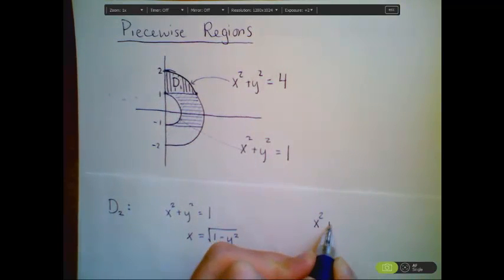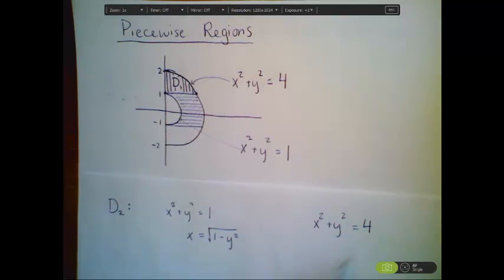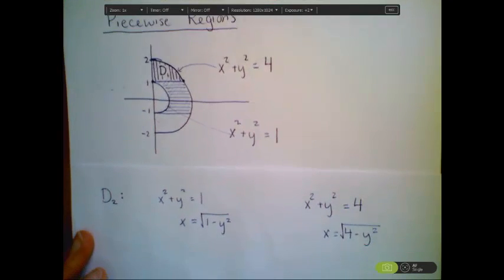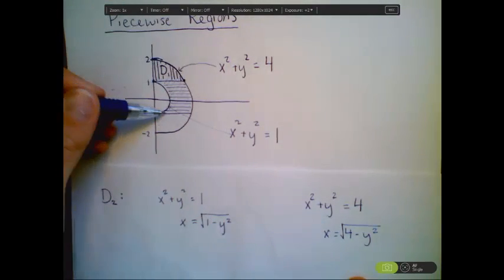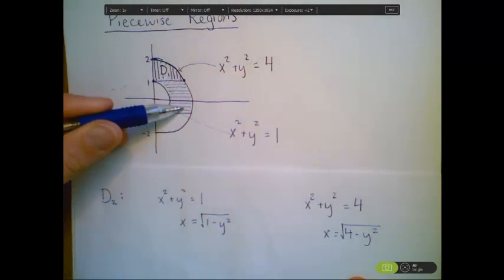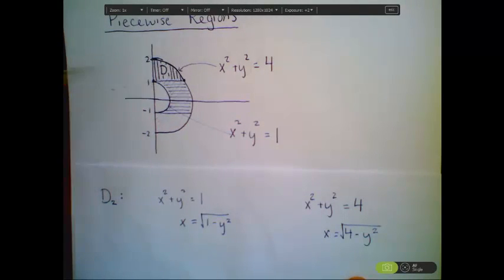Whereas my right-hand bound is by the circle of radius 2. And so that means that my x is equal to the square root of 4 minus y squared. And so those are our bounds on x. What are our bounds on y's? We need to know how many of these horizontal lines we're adding up, and our y's are just going from negative 1 to 1.